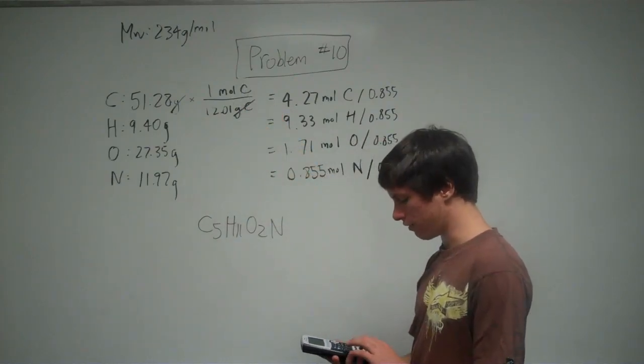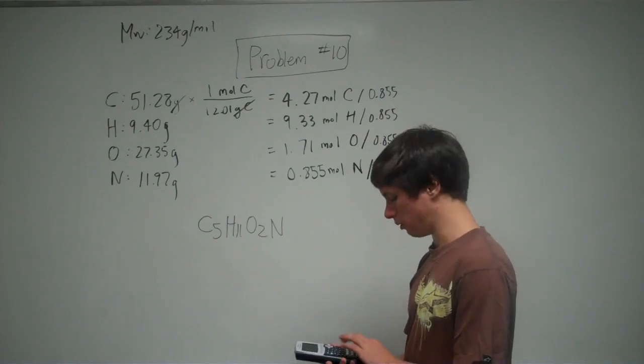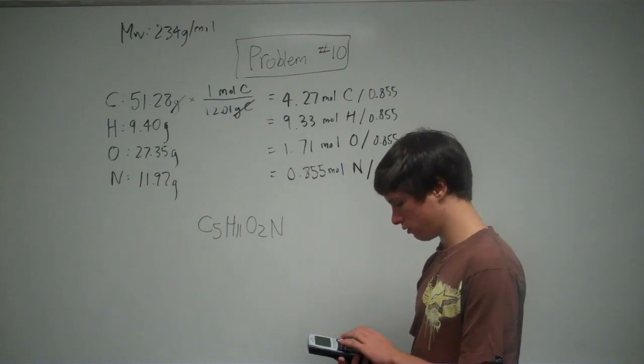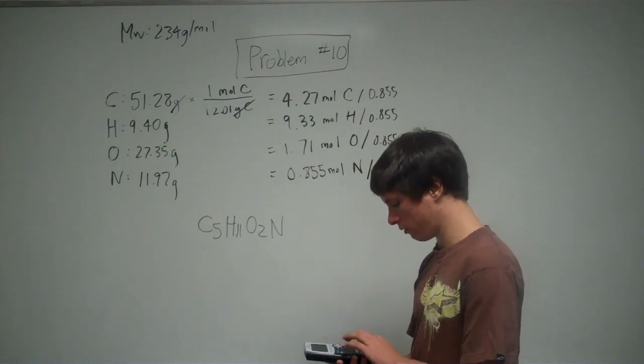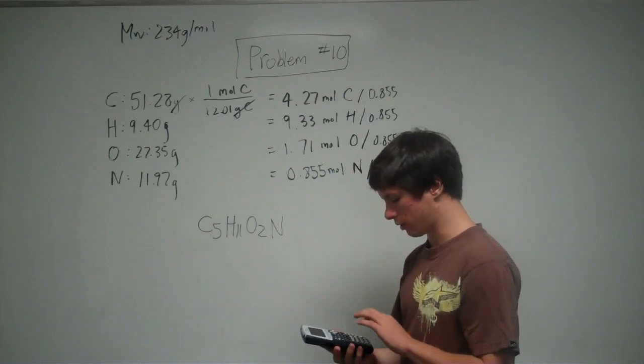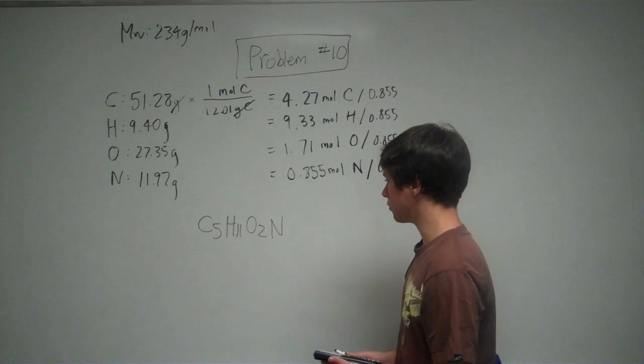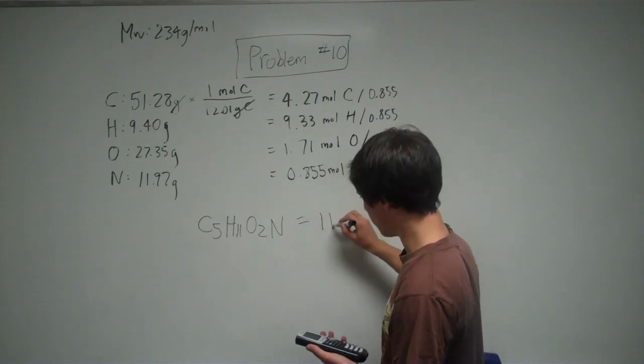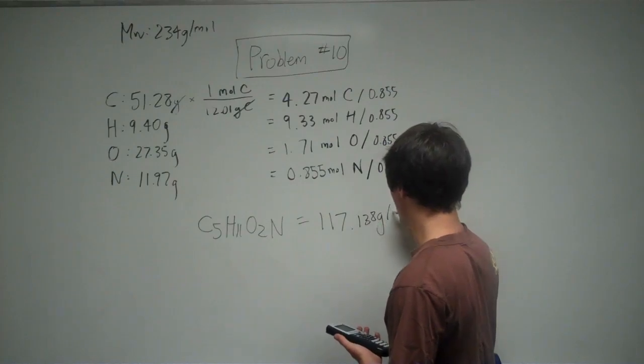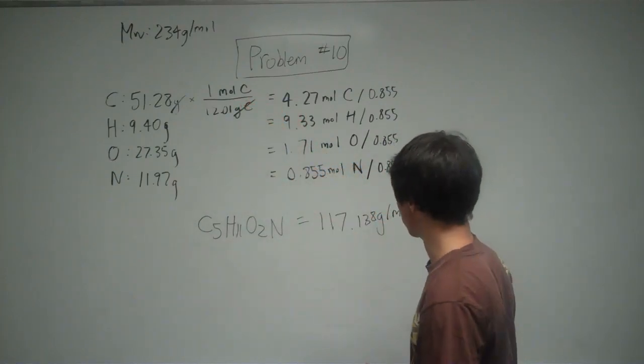So we're going to have 5 carbons, so 12.01 times 5, plus 11 hydrogens, 11 times 1.008, plus 2 oxygens, so 2 times 16, plus 1 nitrogen, plus 14. So this guy weighs 117.138 grams per mole, which is not the molar mass that they gave us for this compound.